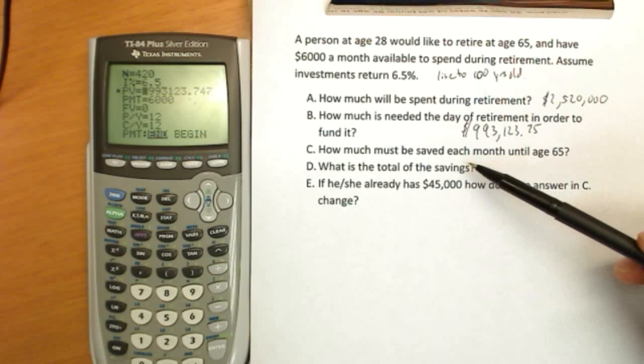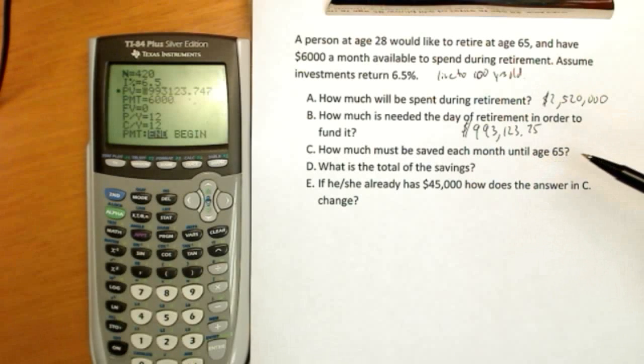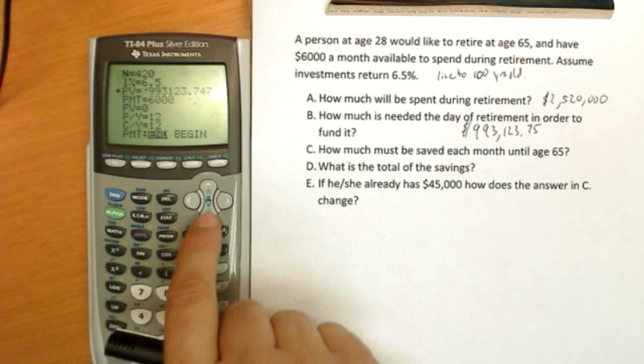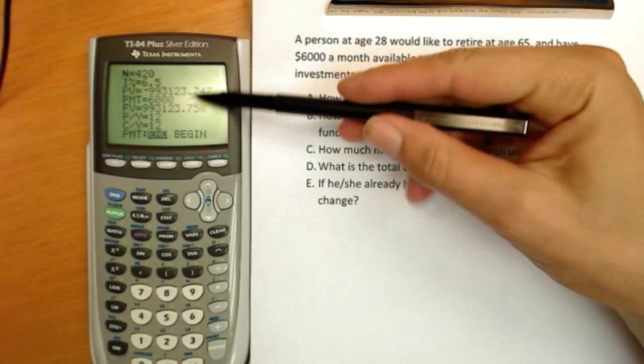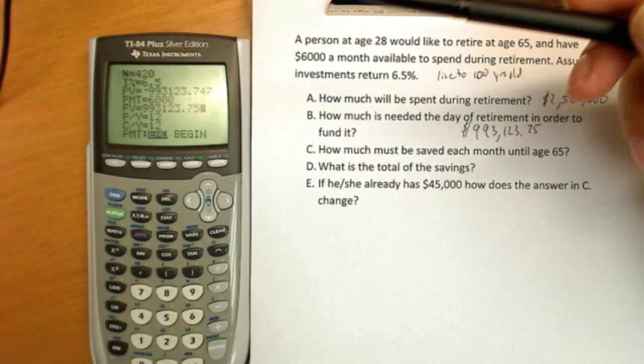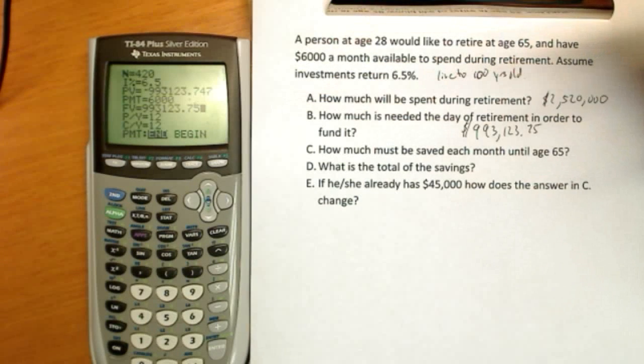How much needs to be saved each month until age 65? So while you're working, how much do you have to actually save? Now we're going to try and save up that $993,000. So I'll transfer it down here. That is now our future value. We're trying to reach that goal of having this amount of money available.